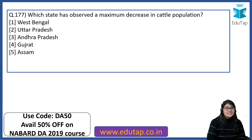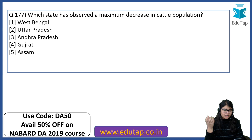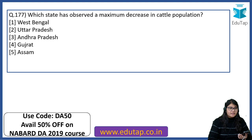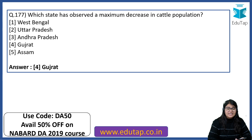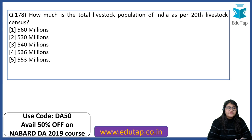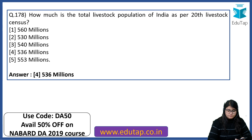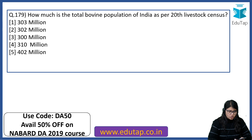Which state observed a maximum decrease in cattle population? These are among 10-12 questions taken from the Livestock Census. The answer is Gujarat. How much is the total livestock population of India as per the 20th Livestock Census? Yesterday we also discussed this — it is 536 million.